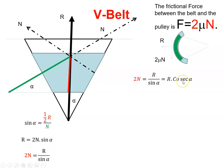One over sine alpha is called cosecant alpha. So R over sine alpha equals R times cosecant alpha. The frictional force then becomes, instead of 2N, I get μ times R cosecant alpha for the 2N.